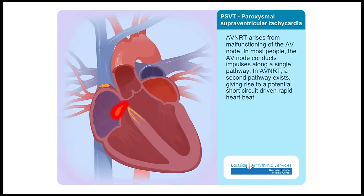AVNRT arises from malfunctioning of the AV node. In most people, the AV node conducts impulses along a single pathway. In AVNRT, a second pathway exists, giving rise to a potential short circuit-driven rapid heartbeat.